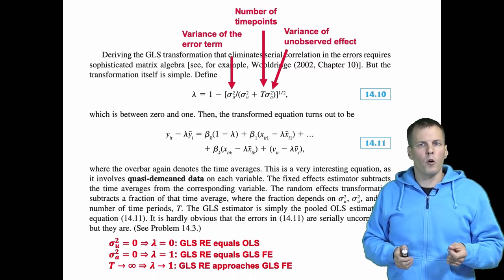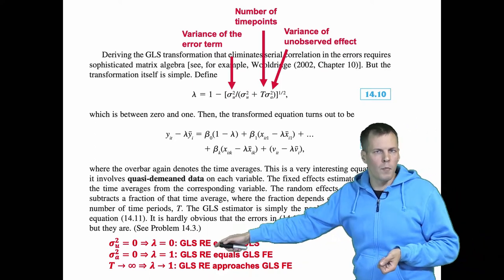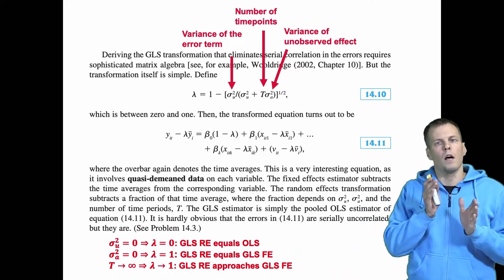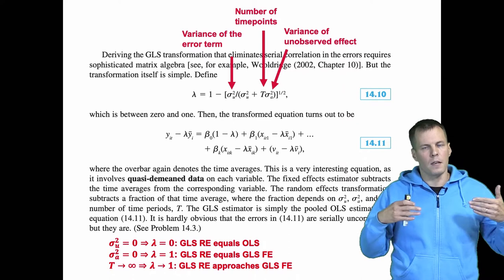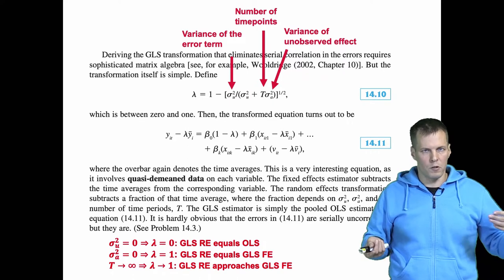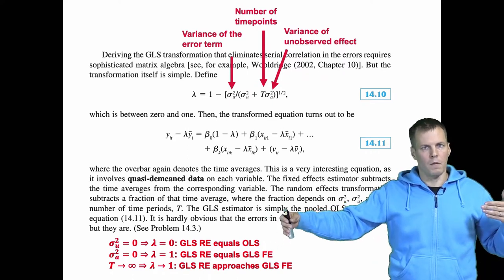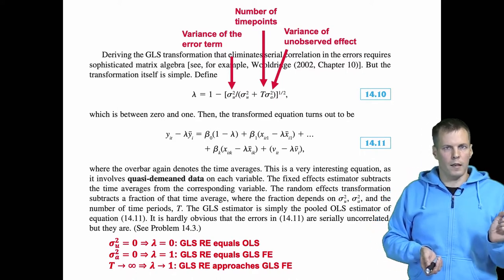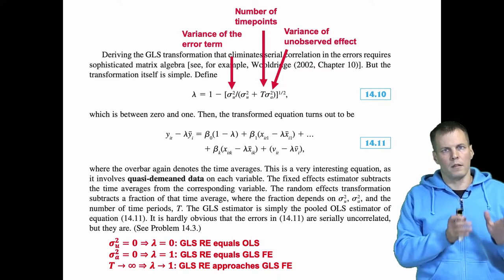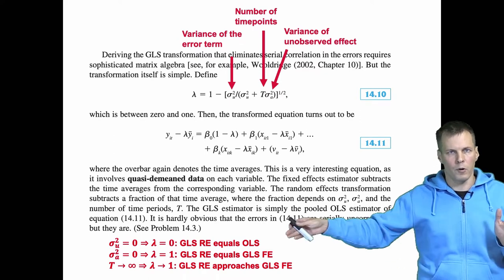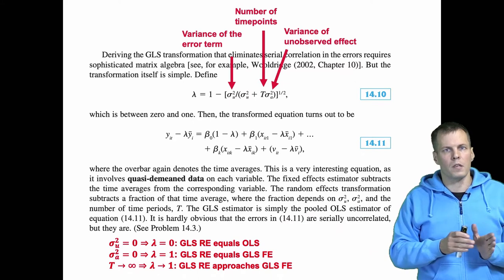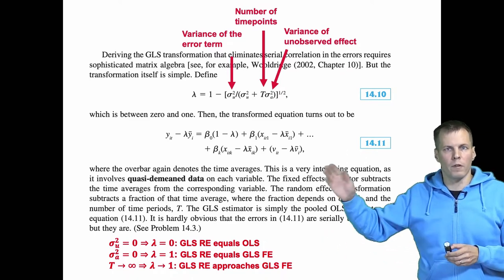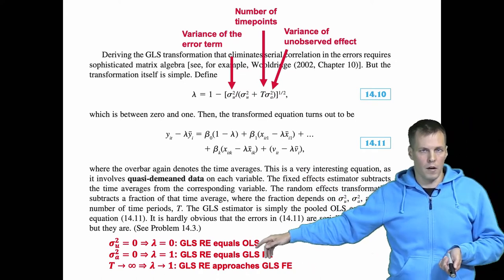Importantly, as the number of time points T increases, lambda approaches one, meaning GLS RE approaches GLS FE. So with a large number of observations, the efficiency difference between GLS RE and GLS FE diminishes. This is intuitive: GLS FE uses only within information, while GLS RE also uses between information. The number of between-cluster differences doesn't depend on T, but more time points give more information on how cases vary over time, making GLS FE better and causing GLS RE to converge toward it.